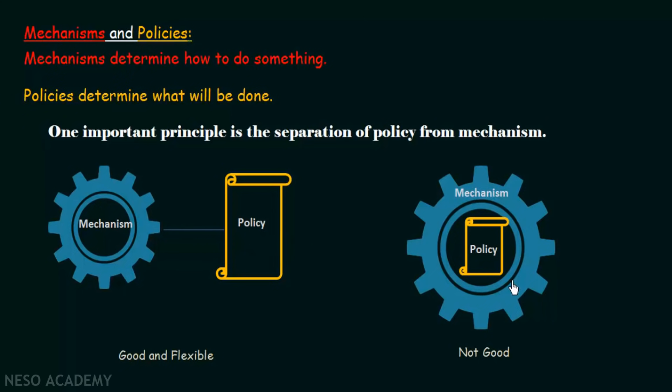If mechanism and policy are combined as one unit, your car is designed to run at 50 km/h. When a new policy says you must slow to 40 km/h, you have to change the mechanism as well — which is very bad. Changing the entire mechanism for every policy change is not flexible, not practical, and not efficient.